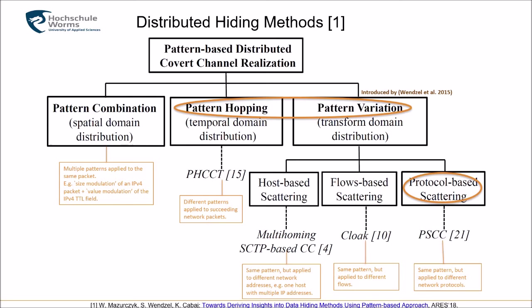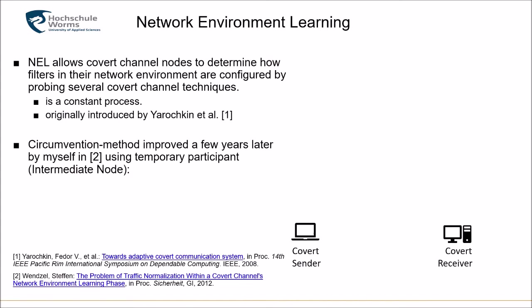Using a pseudo-random number generator, this combination can be done easily, and there are also proof-of-concept codes available — look up the references. The figure is from the paper 'Towards Deriving Insights into Data-Hiding Methods Using Pattern-Based Approach' from summer 2018, which references more work and downloadable proof-of-concept code. PHCCT and PSCC are written by myself and are available on my website and on GitHub.